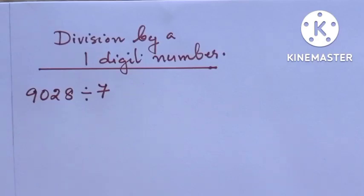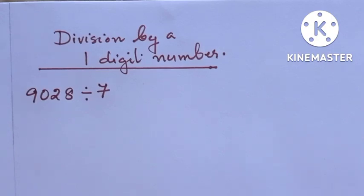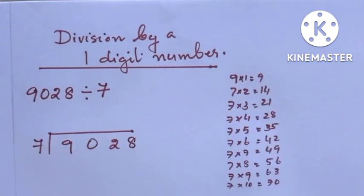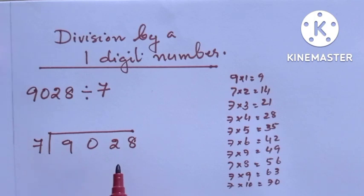Hi viewers, in this video we are dividing a 4-digit number by a 1-digit number. The 4-digit number is 9028 and we are dividing this number by 7. Here, 7 is the divisor and 9028 is the dividend.